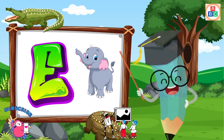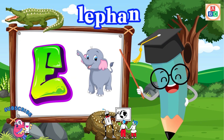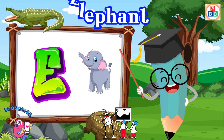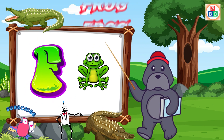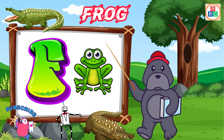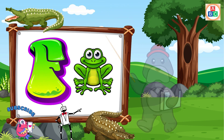E is for elephant, e-e-elephant. F is for frog, f-f-frog.